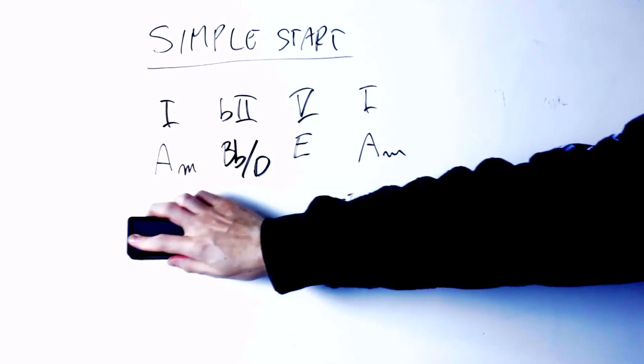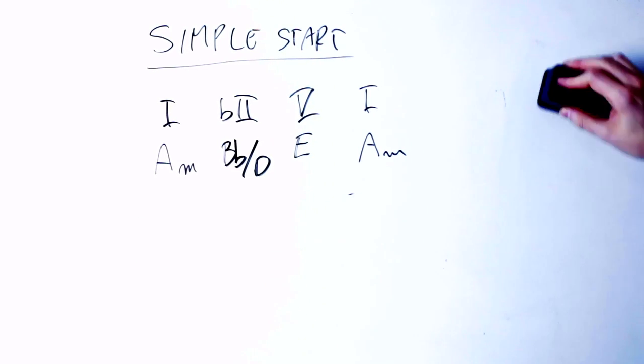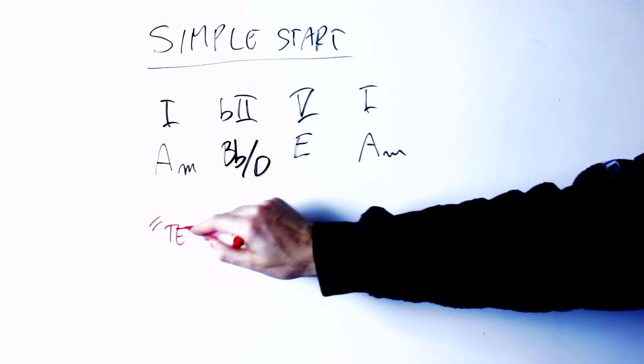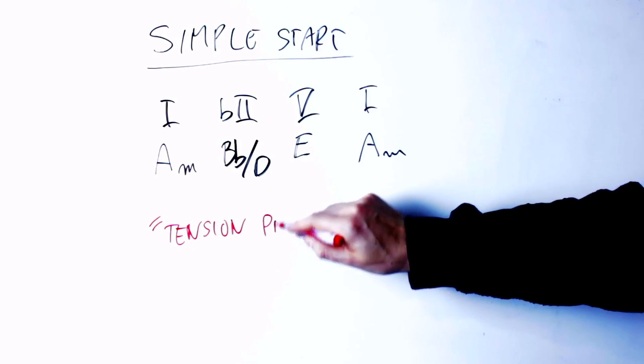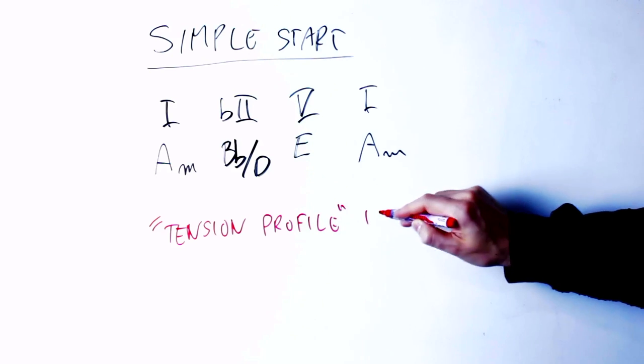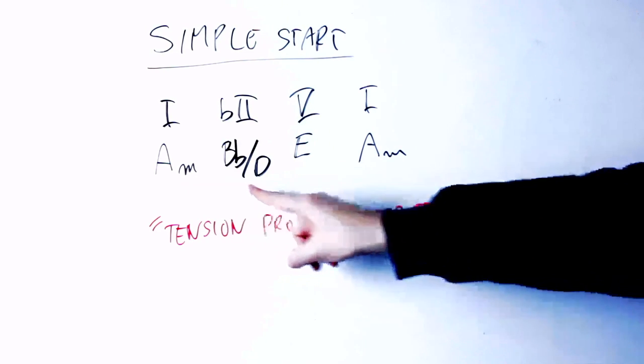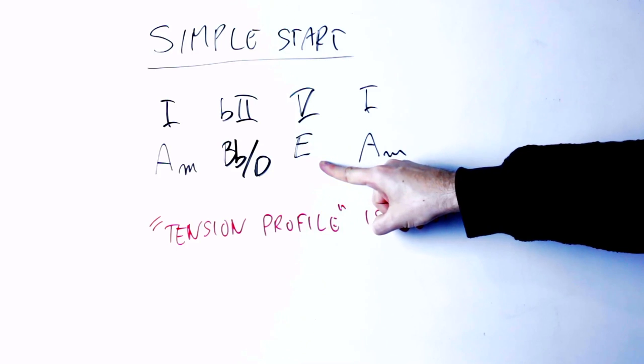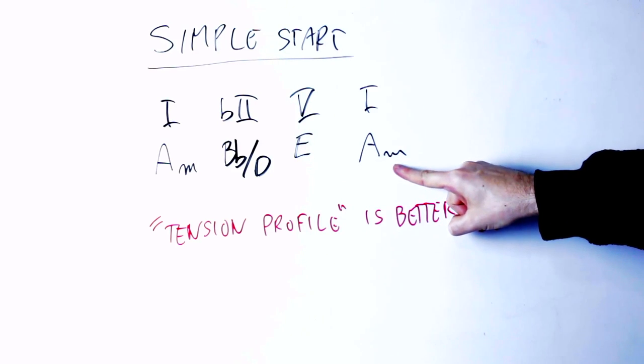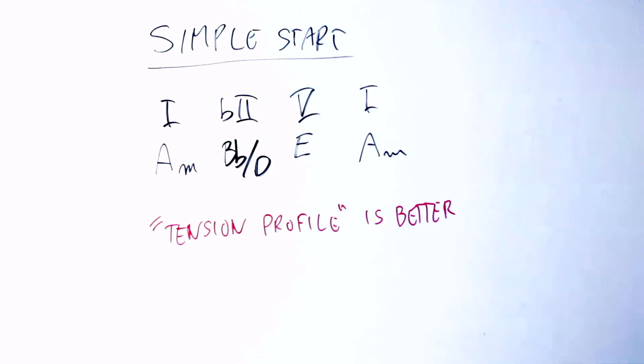But what we care about are not names. What we care about is what does the Neapolitan chord do to our progression. Well, as you can see right now, the tension profile of the chord progression is more interesting. It's not weak as before, there is no weak link in the chain anymore. Now you have the Am chord being the rest chord, the Neapolitan chord giving tension, then the fifth chord giving even more tension, and then it resolves to the first chord again. So again, the tension profile here has more punch than before, and if this is what you want to go for, it sounds great.